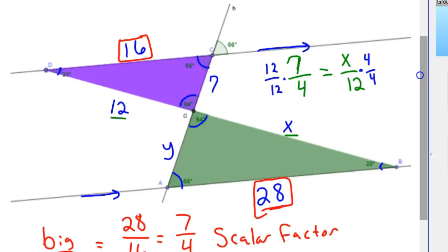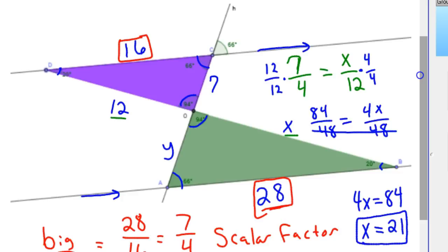And so we would have 84 over 48 equals 4x over 48. And then your denominators, you could multiply by 48 and they would cancel. So 4x equals 84. And then you divide that and x equals 21. So 84 divided by 4 is 21. So we know the length of this side here now is 21.